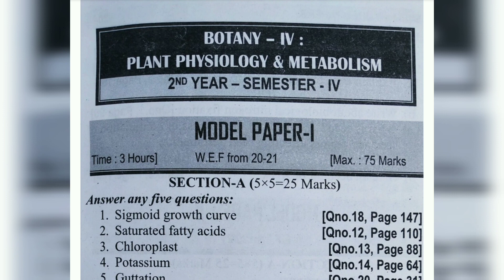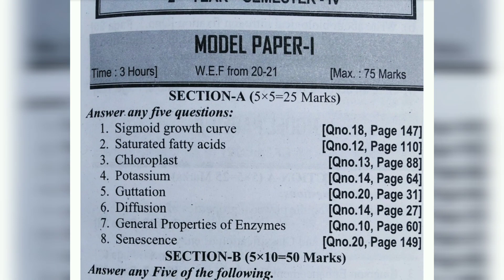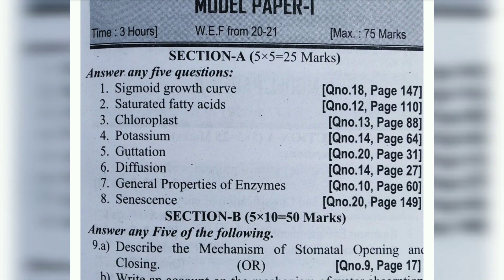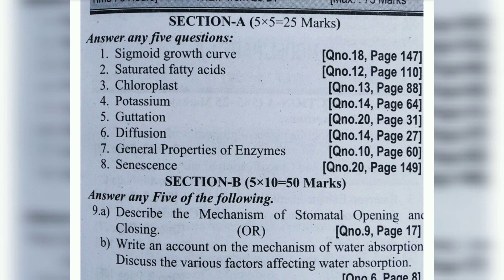Model Paper 1 short questions: sigmoid growth curve, saturated fatty acids, chloroplast, potassium, guttation, diffusion, general properties of enzymes, and senescence. Even if you skip other short questions, concentrate on these. Chloroplast, potassium, guttation, diffusion, and general properties of enzymes - these are topics where at least basic knowledge is needed for Botany students and BJC/Life Science students.